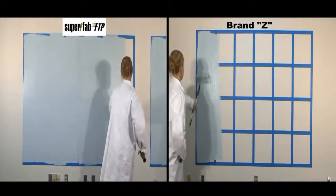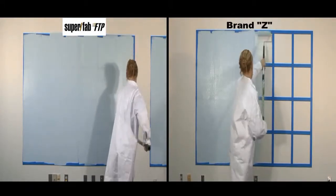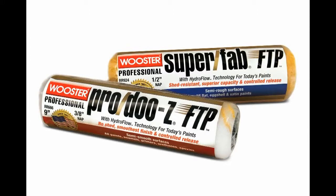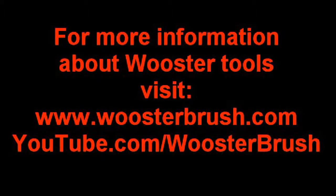Choosing the right roller is the same as it's always been. For increased production, choose SuperFab FTP. For a finer finish, choose ProDoozie FTP. Both brands are available in 9, 14, and 18 inch as well as Jumbo Coater sizes. And they're made in the USA.